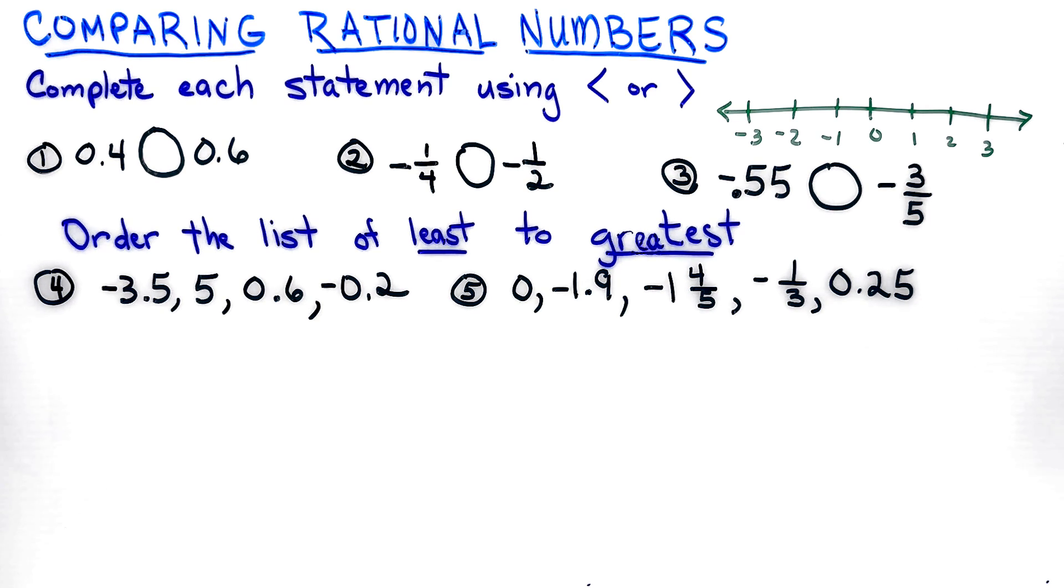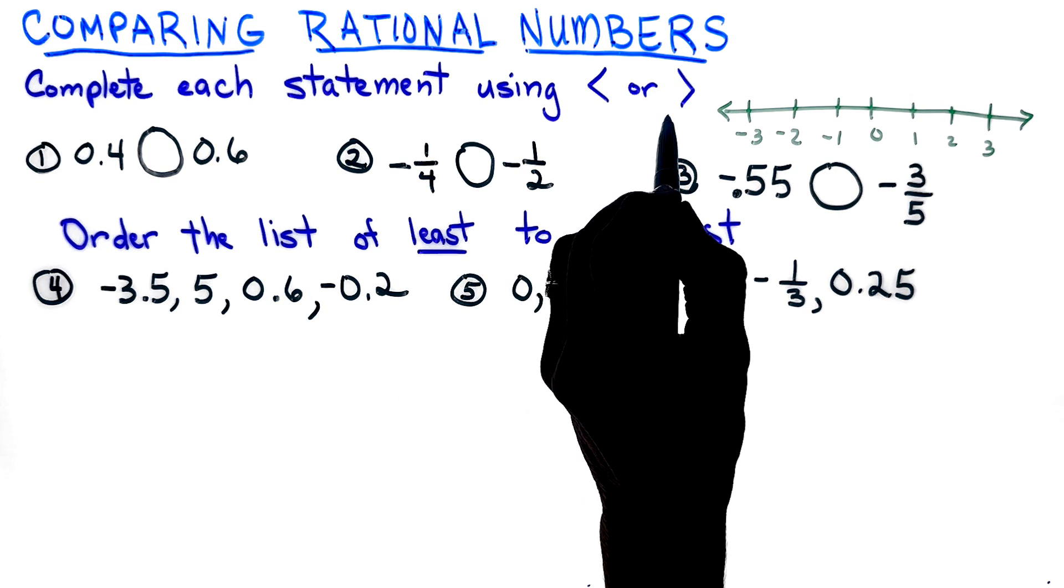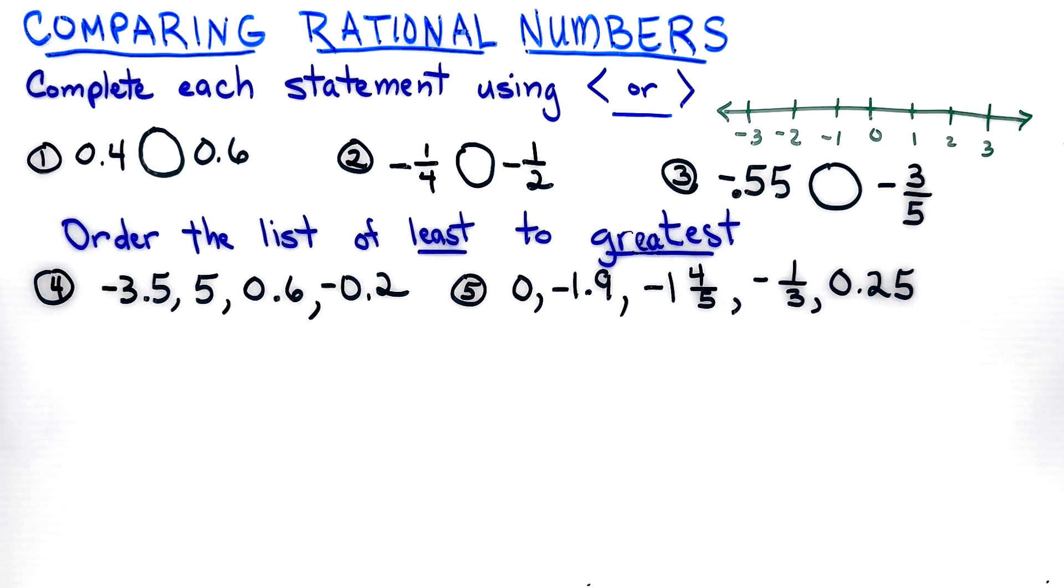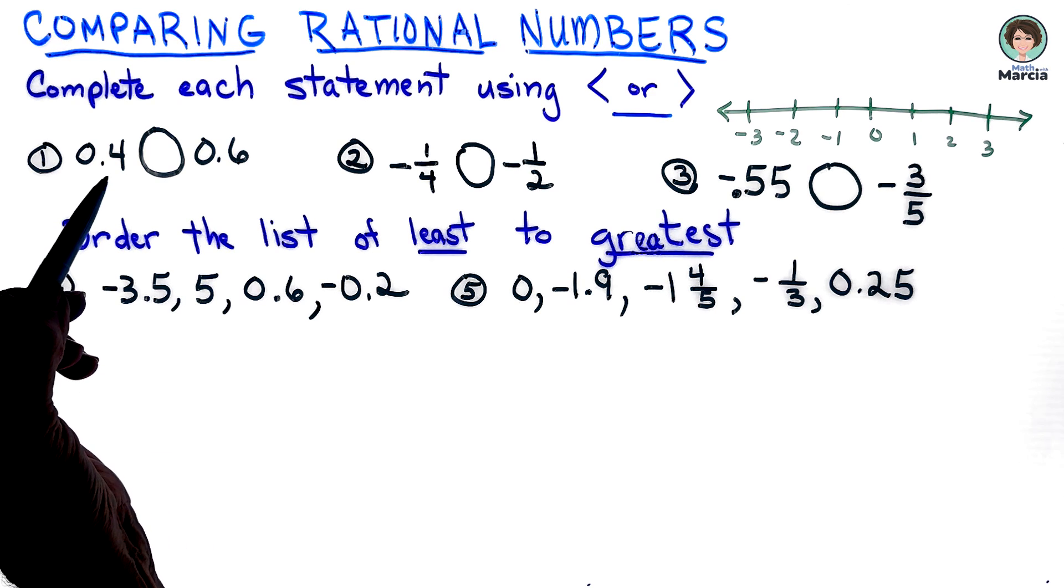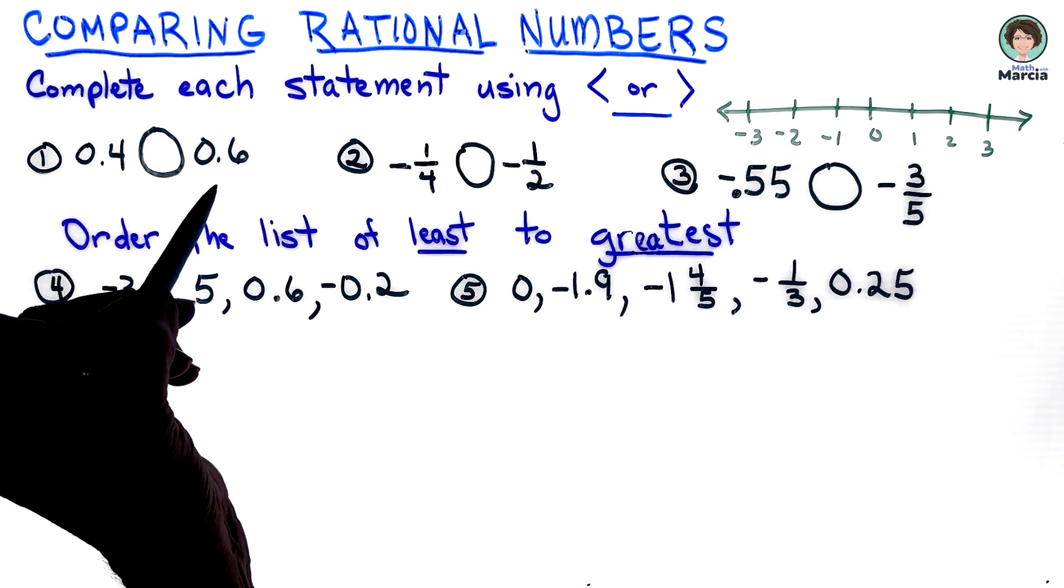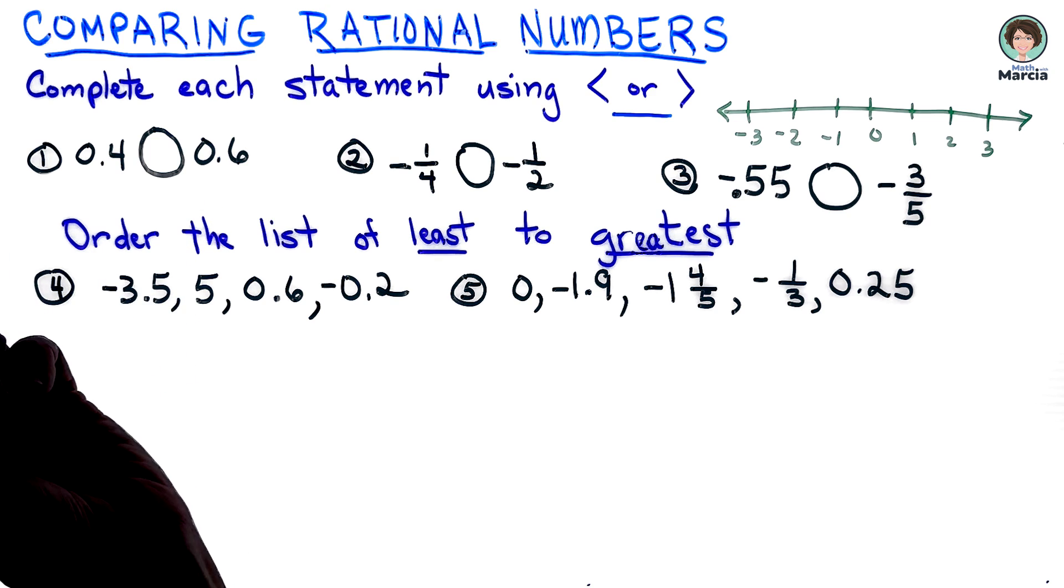Let's look at the first one. The directions say to complete each statement using less than or greater than. When I'm looking at number one, I have four tenths and six tenths. Those are both positive and I know that four tenths is definitely less than six tenths.